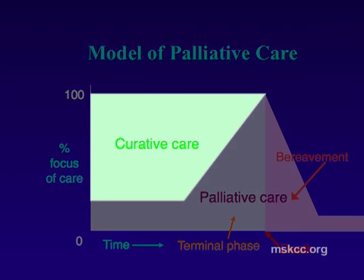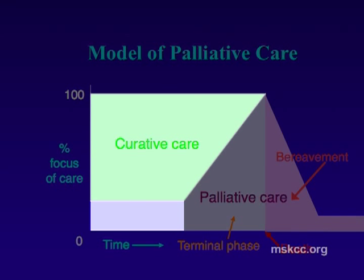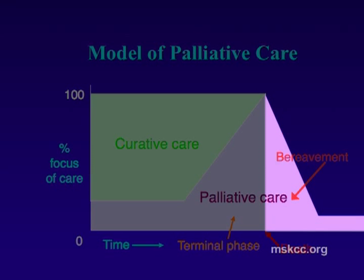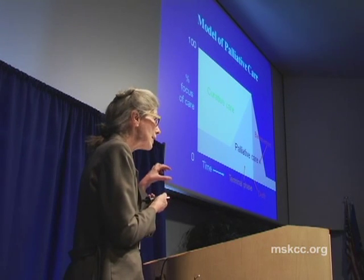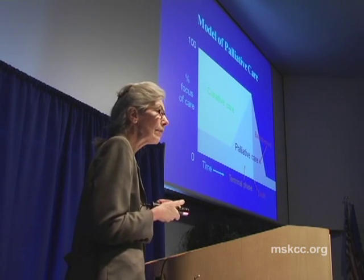During curative or life-prolonging therapy, if you have pain, shortness of breath, distress, or other symptoms, palliative care goes alongside that therapy. But if treatment becomes no longer helpful and is causing more distress without benefit — the burden outweighs the benefit — then palliative care becomes the focus of care. At the end of life, with a life expectancy of six months or less, the model through which palliative care is practiced is a hospice model. So palliative care runs all the way through, but it is intensified at end of life through the hospice model.